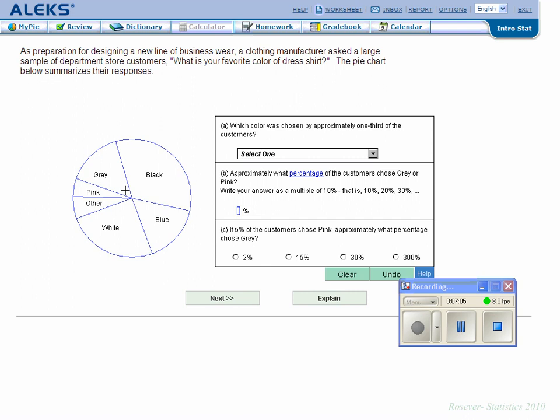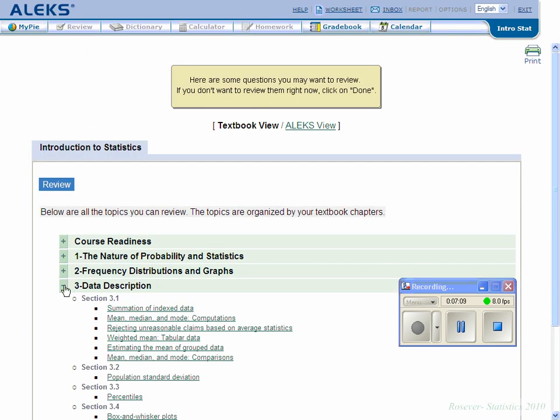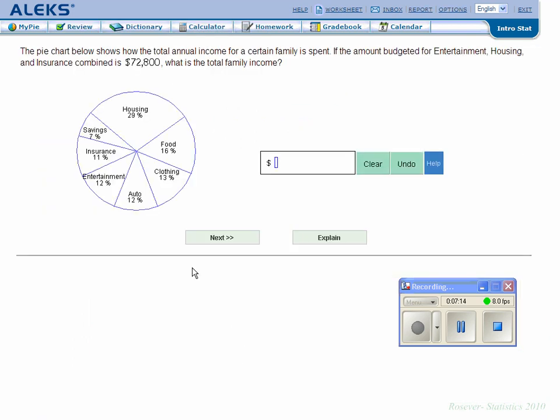Let's go back. Computations from pie charts, that's the right one. If the budgeted amount for entertainment, housing, and insurance combined is $72,800, so entertainment, housing, and insurance—that is 13, 23 sorry, 23 plus 29 is 52, so that's 52%.